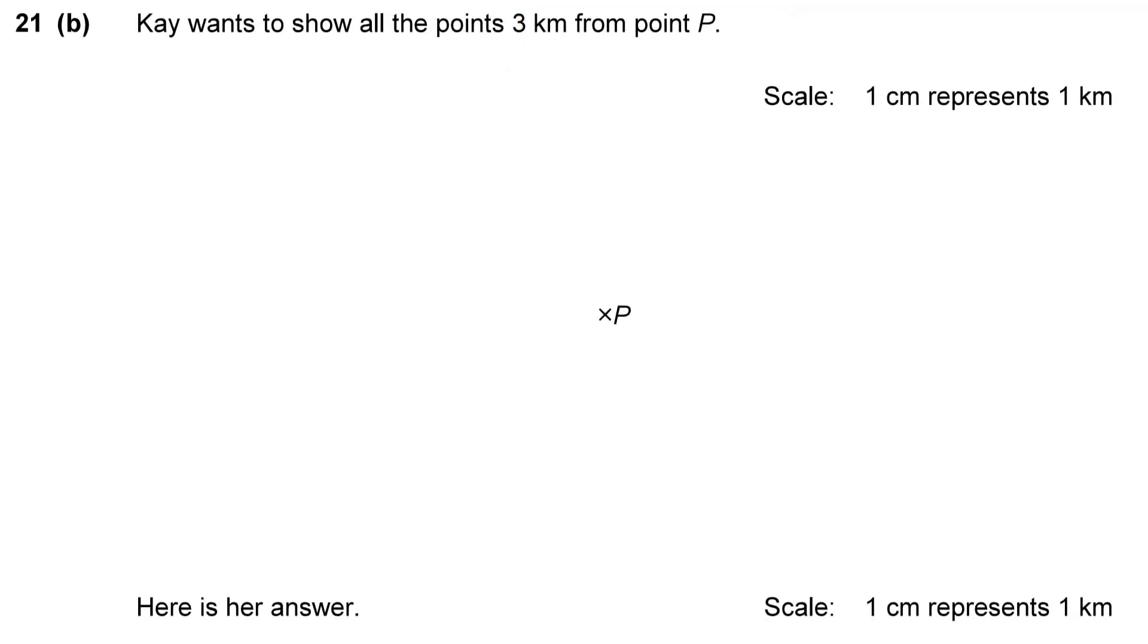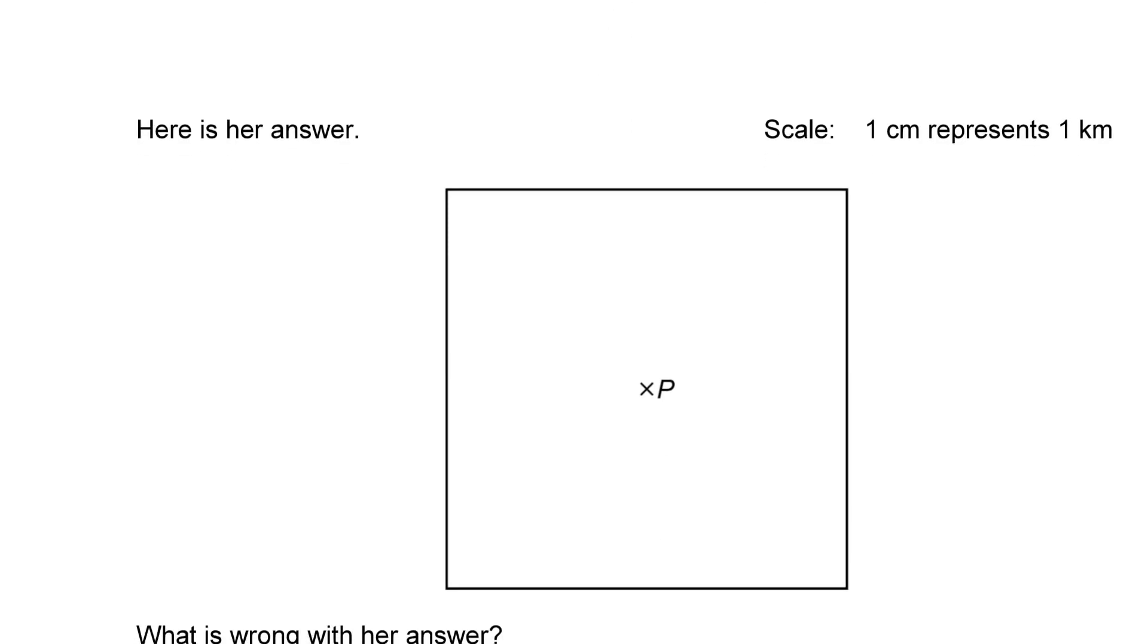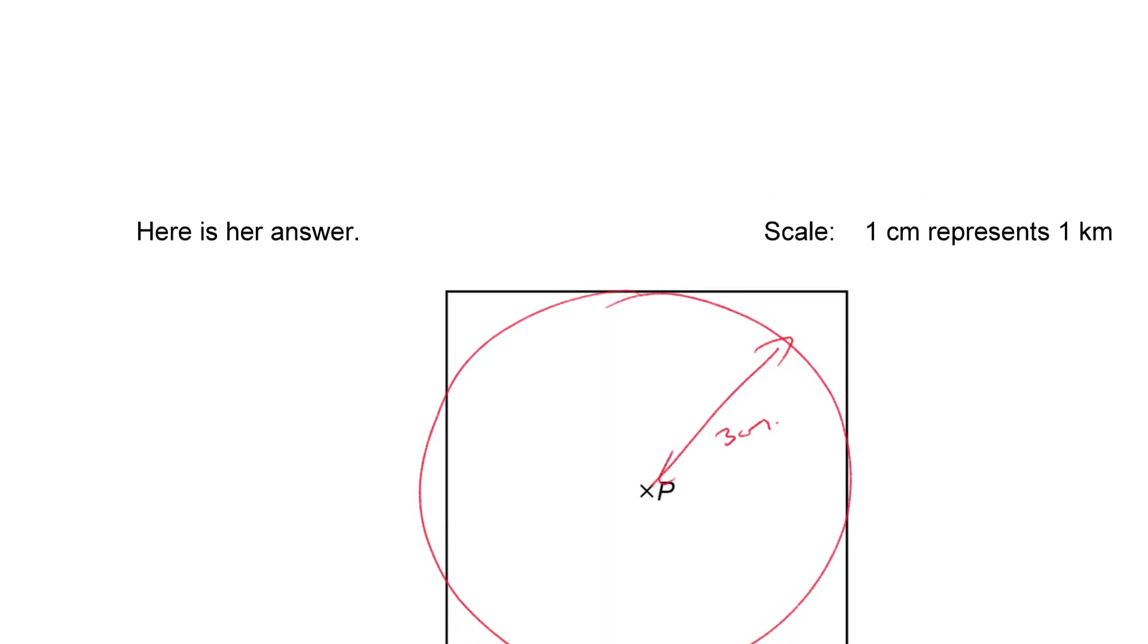21B. K wants to show all the points three kilometers from the point P where one centimeter represents one kilometer. Here is her answer. Now, she's drawn a square around P. And what's wrong with that answer? Well, what she needed to do was not draw a square, was it? She should have drawn a circle with radius three centimeters and then all the points on that line would have been the locus she was looking for.